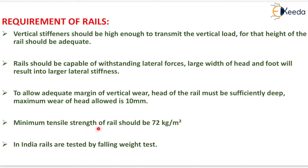The minimum tensile strength of rail should be 72 kg per square meter. In India, rails are tested by the falling weight test.